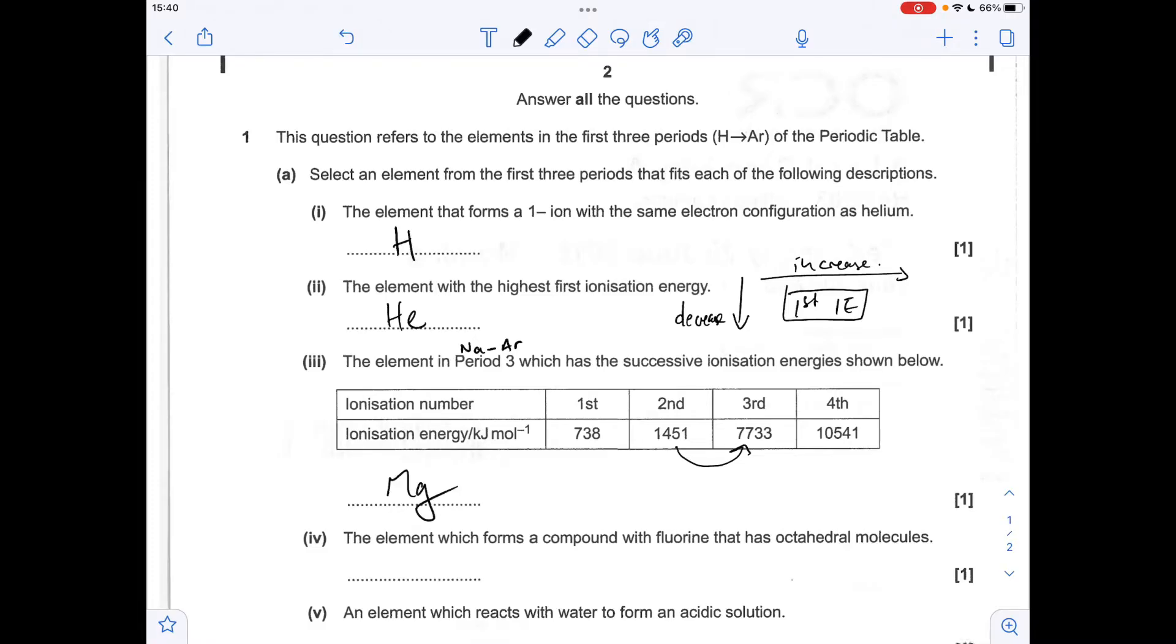Part four, the element that forms a compound with fluorine that's got octahedral molecules, well, the molecule in question is sulphur hexafluoride, and so the element is sulphur.